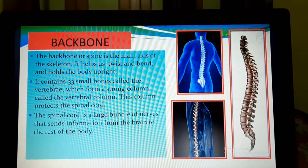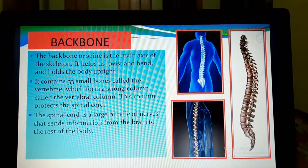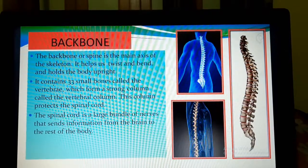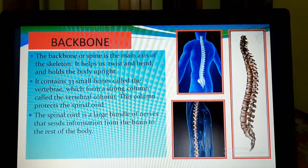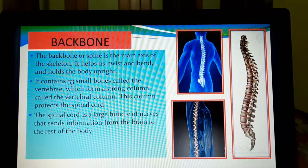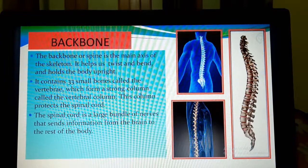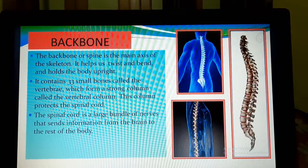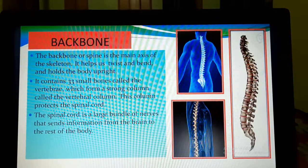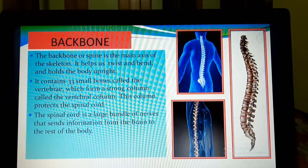Each one is called a vertebra, and in plural we say 33 vertebrae. These 33 vertebrae form a strong column called the vertebral column. Through this column, the spinal cord passes — so the vertebral column protects the spinal cord. It allows the spinal cord to pass through it as well as protects it.